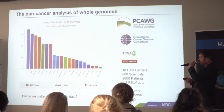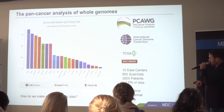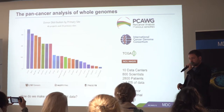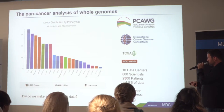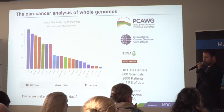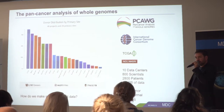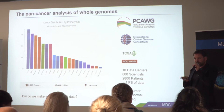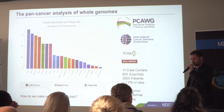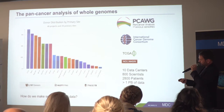One such example is PCAWG — the Pan-Cancer Analysis of Whole Genomes — a joint effort of the ICGC and TCGA and currently the world's largest cancer consortium. They sequenced more than 3,000 patients: the whole genome of a tumor sample and the whole genome of a healthy tissue, together with another 1,200 RNA-seq samples. This was over a petabyte of data, with over 1,000 scientists in 10 data centers. A major challenge was distributing that data to different centers over the internet and processing it all in parallel with the same software.